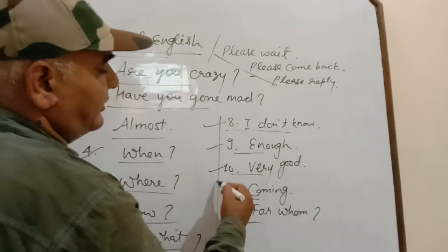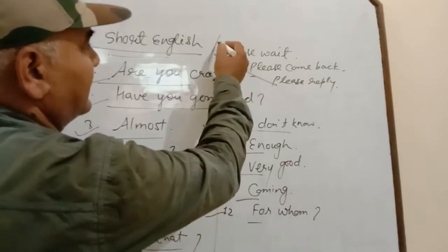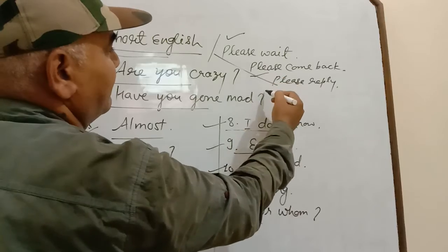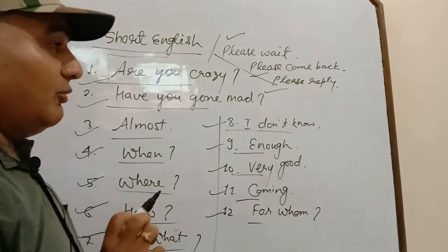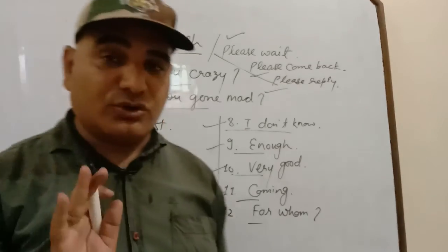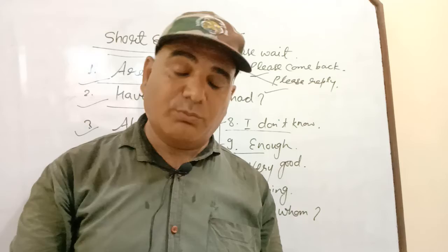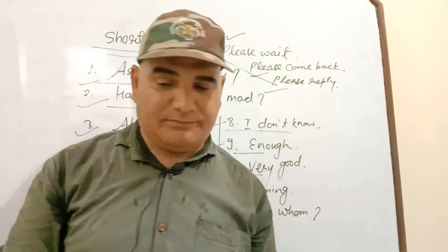Now repeat these sentences with me: are you crazy, have you gone mad, almost, when, where, how, for what, I don't know, enough, very good, coming, for whom. And for requests: please wait, please come back, please reply. Learn these in a short way to convey the message. Best of luck!